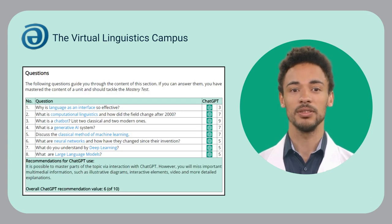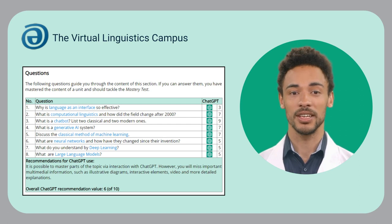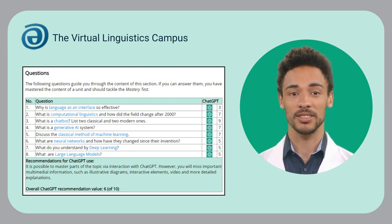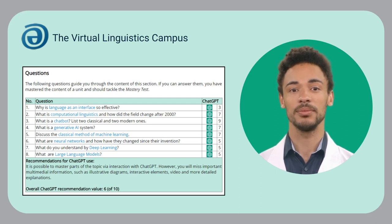My recommendation: use the question sheet of the how-to-proceed section for guidance. If you can answer the questions, great. If not, either click on the hyperlinks or use ChatGPT for help.